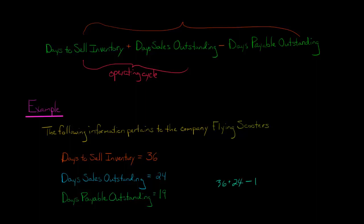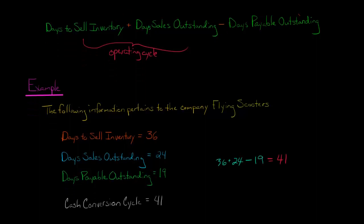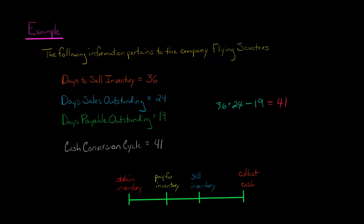But then we subtract the 19. The 19 means that when this company buys that inventory, they're buying it on credit from manufacturers, and it takes them 19 days before they pay that back. So 60 minus 19 gives us 41 — that's our cash conversion cycle.